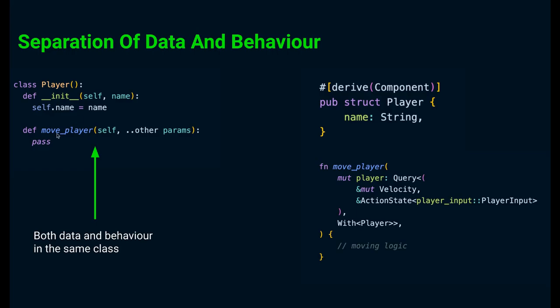The movePlayer function is also part of the player class. How this would work in object-oriented programming is we would create an instance of the player class with all its data like name, and then using that instance we would call the movePlayer method.